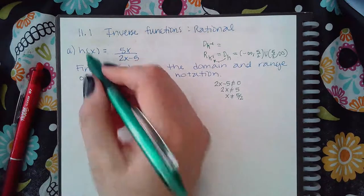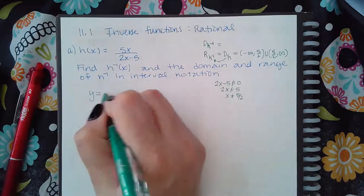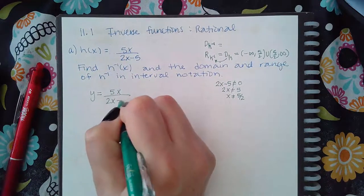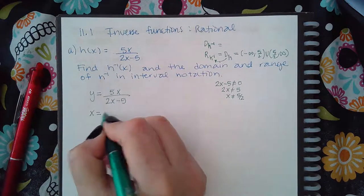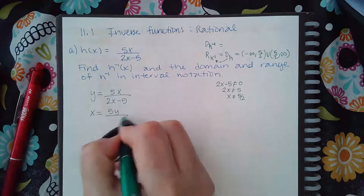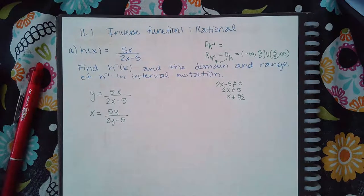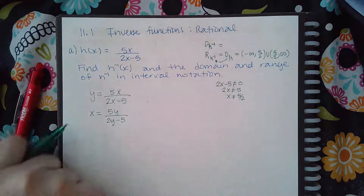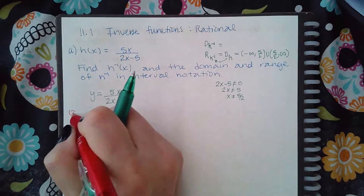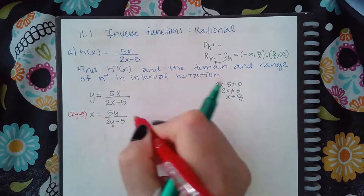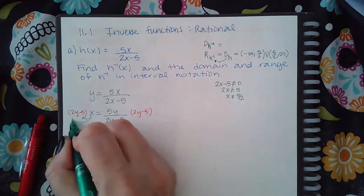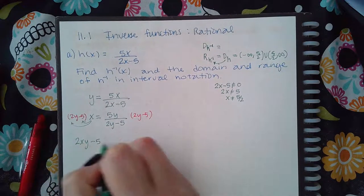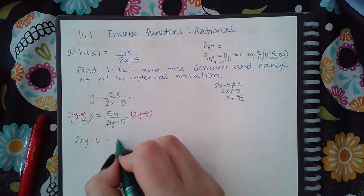Now let's find the inverse. We're going to change the h notation to y, then interchange the x and y's — so the y will become an x and all the x's will become y's. To solve for y, it's going to be a little more complicated. The first thing I want to do is multiply both sides by the common denominator so that I no longer have a fraction. If I distribute this, I get 2xy minus 5, and this will cancel, giving me 5y.